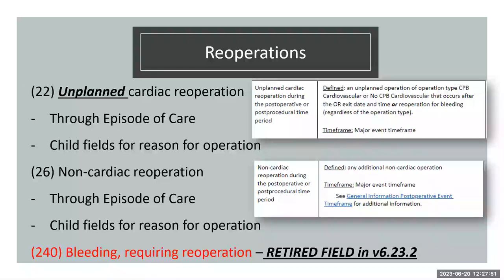For re-operations, we are now down to two codes instead of three: code 22 for unplanned cardiac re-operation and code 26 for non-cardiac re-operation. Both are major complications collected through the episode of care with child fields for reason. Code 240 bleeding requiring re-operation is retired in version 6.23.2. Unplanned cardiac re-operation includes any unplanned operation with CPB or cardiovascular op-type after the index, or a re-operation for bleeding regardless of op-type.